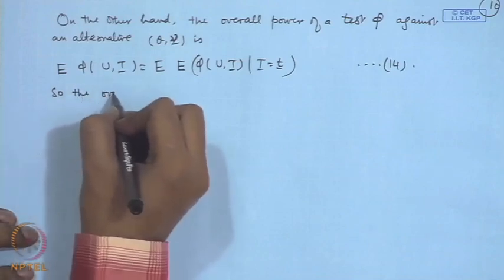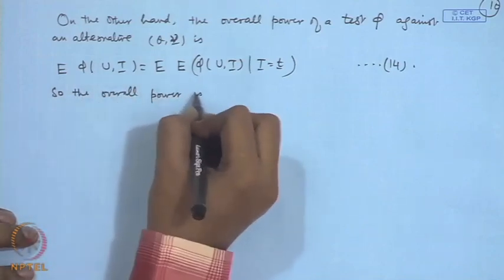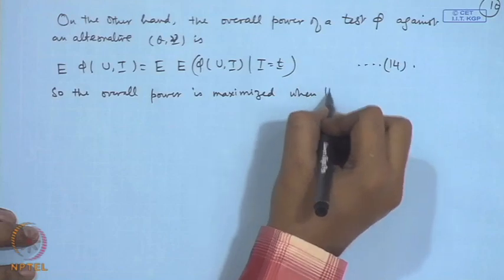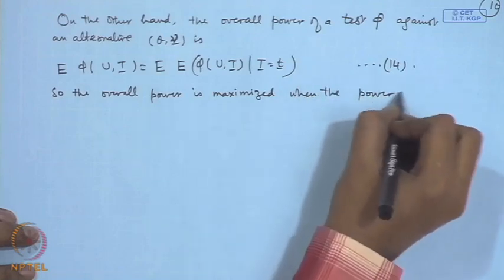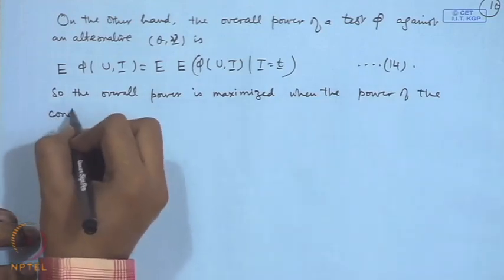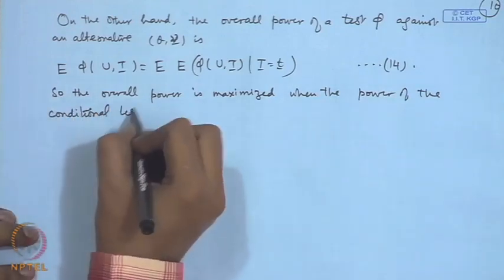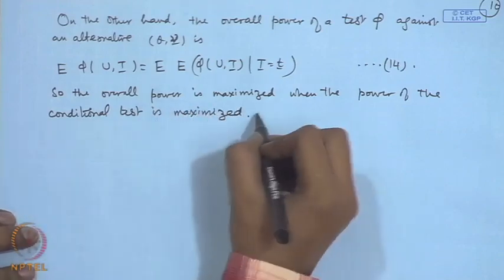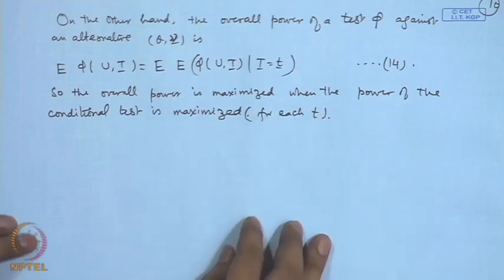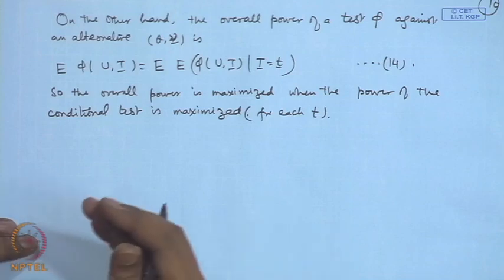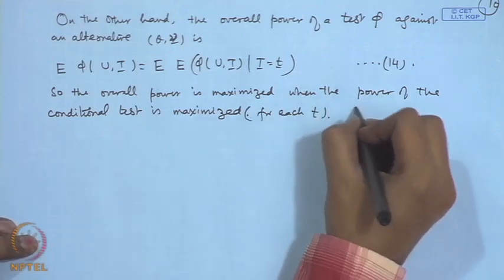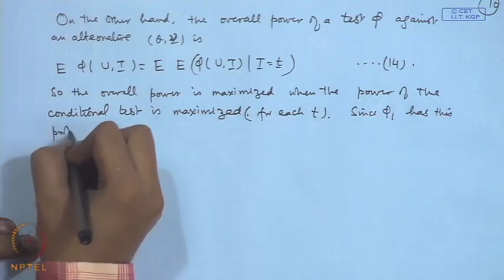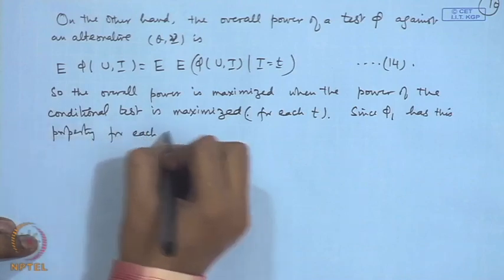So, the overall power is maximized when the power of the conditional test is maximized for each t. Now, phi 1 was already having this property.